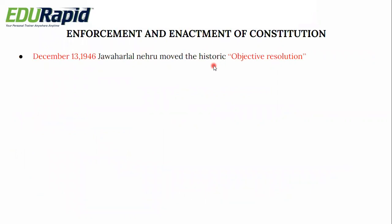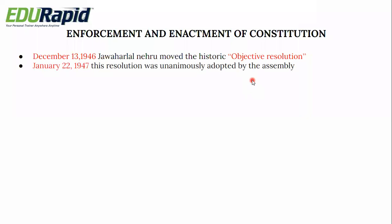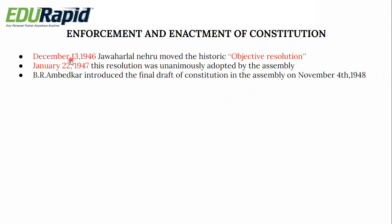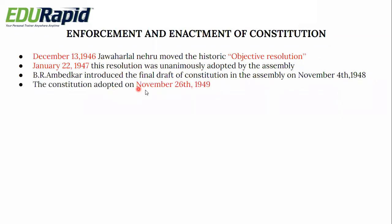Regarding enactment and enforcement: in December 1946, Jawaharlal Nehru moved the historic Objective Resolution, which ultimately became the preamble of the present constitution. On January 22, 1947, this resolution was unanimously adopted by the Constituent Assembly. B.R. Ambedkar introduced the final draft of the constitution in the assembly on 4th November 1948. The constitution was adopted on November 26, 1949. The series of events: first the Objective Resolution was moved, then unanimously adopted by the assembly, then the final draft was introduced, then adopted on November 26, 1949.